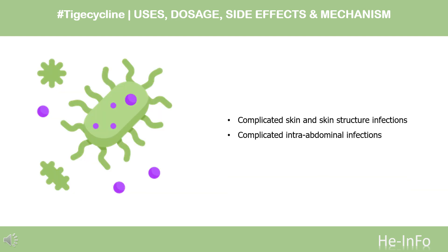What is Tigecycline used for? For the treatment of infections caused by susceptible strains of the designated microorganisms in the following conditions: complicated skin and skin structure infections caused by Escherichia coli, Enterococcus faecalis (vancomycin-susceptible isolates only), Staphylococcus aureus (methicillin-susceptible and resistant isolates), Streptococcus agalactiae,